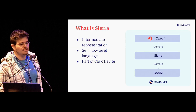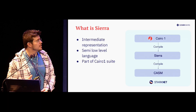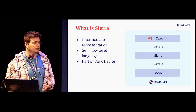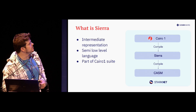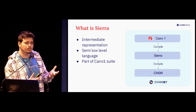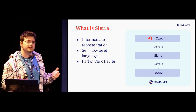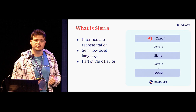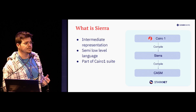What is Sierra? It's part of the new Cairo 1 compilation stack. It's an intermediate representation. The flow in Cairo 0 is that you have some high-level syntax in Cairo 0 compiled directly to Cairo Assembly.